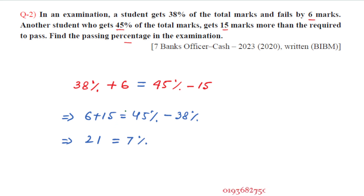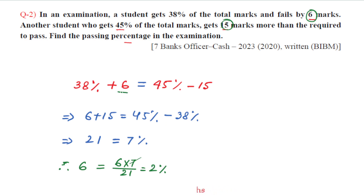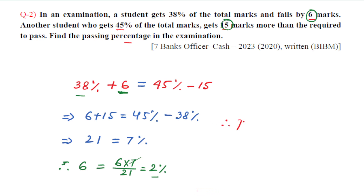The passing marks: 6 marks short means 6 equals 2 percent. Therefore the passing percentage is 38 plus 2 percent, which equals 40 percent. So 40% is the answer.